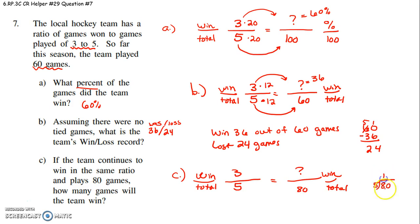5 goes into 8 once. Oops. 5 goes into 30 six times. That says I have to multiply 5 by 16 to get to 80. Therefore, I have to multiply 3 by 16. I think 16 times 3 is 48. 6 times 3 is 18. 3 times 1 is 3 and 1 more is 4. So they have won 48 out of 80 games.